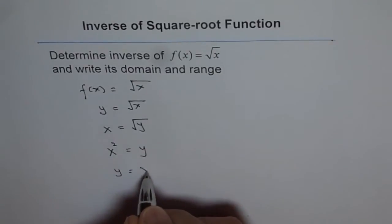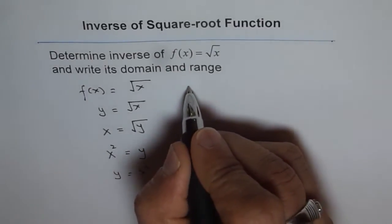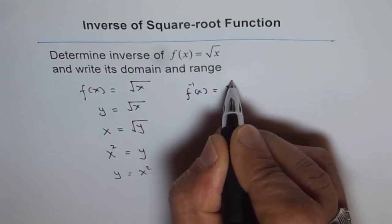So we got y equals x square. Right, perfect. We got y equals x square. Now since y equals x square, we can write down inverse of this function as f inverse of x is equal to x square.